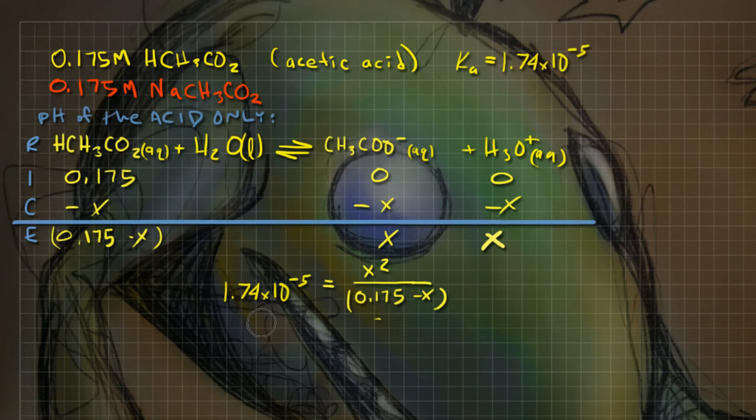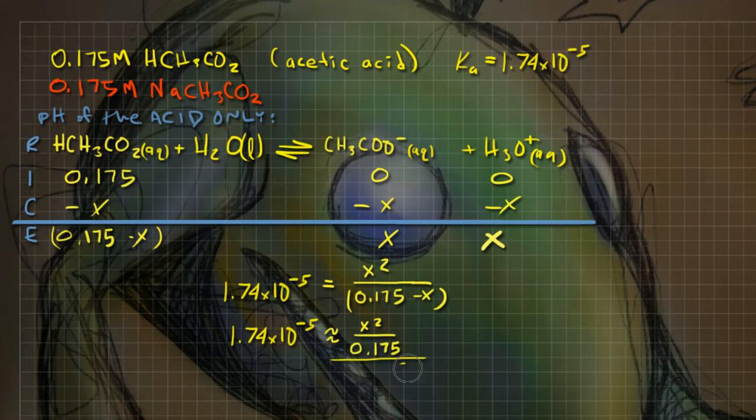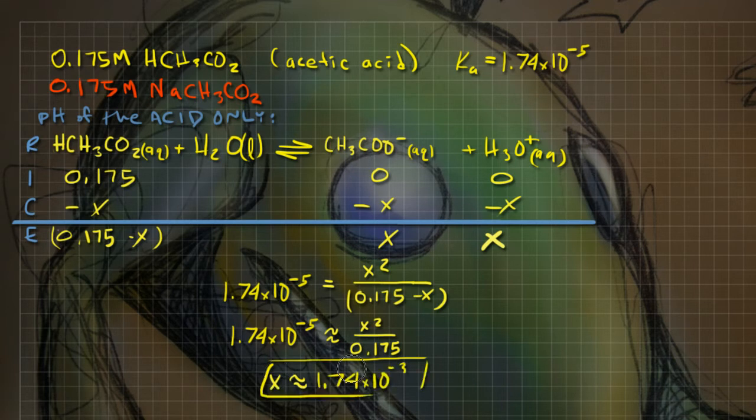I could solve this with a quadratic formula, but I just want to get an approximation because it's going to be so close anyway. I'm going to say that my acid constant is approximately equal to x squared over 0.175, which is valid so long as my value for x is less than 5% of the original concentration. I did the math and I get 1.74 times 10 to the negative third power.